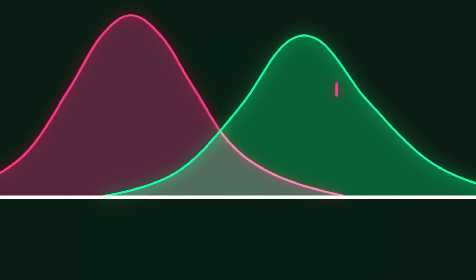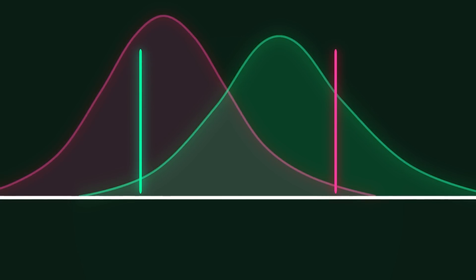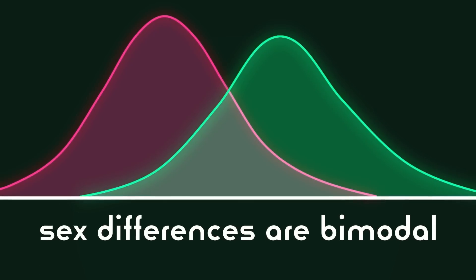A bimodal distribution covers every outlier, as each outlier can be found on the tail ends of the graph. For instance, there are plenty of really tall women, and they are still women. And there are plenty of really short men, and they are still men. In this way, sex differences are bimodal, but sex itself is not.